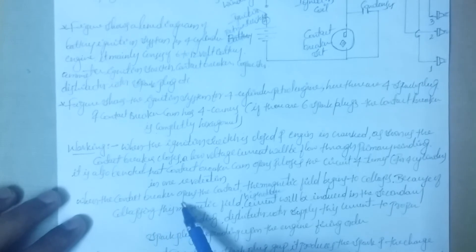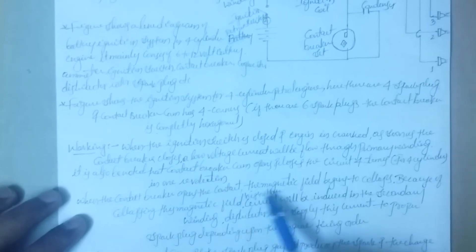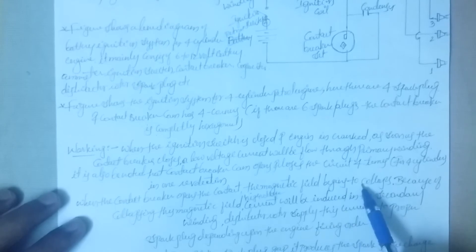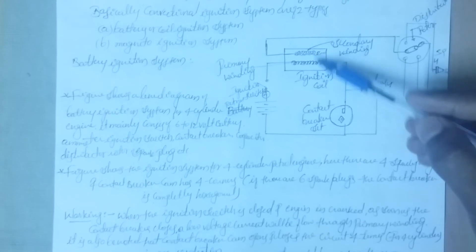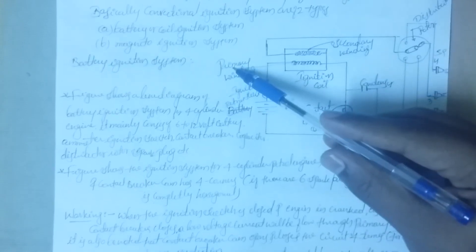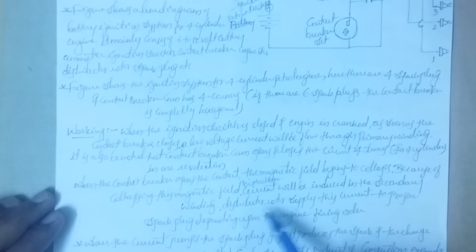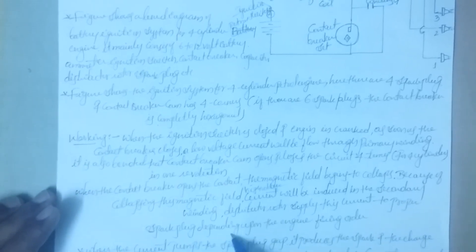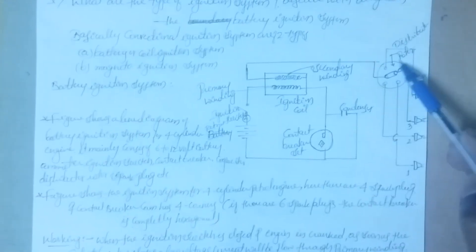When the contact breaker opens, the magnetic field begins to collapse. There is a collapse of flux in the primary winding, and a high voltage current is induced in the secondary winding. The distributor rotor supplies this high voltage current to the proper spark plug depending upon the engine firing order.